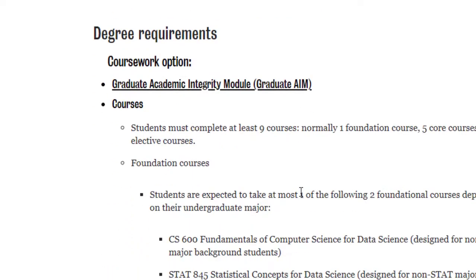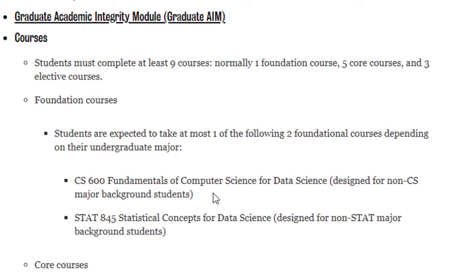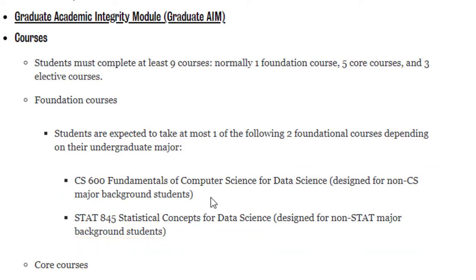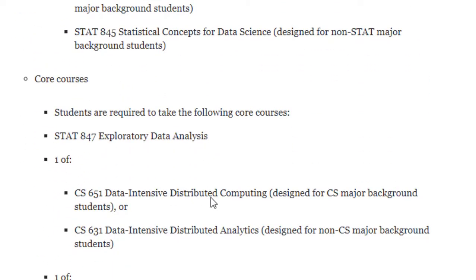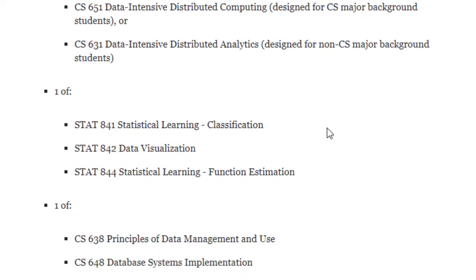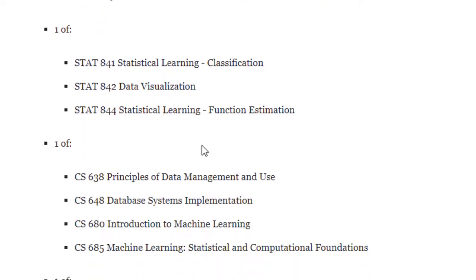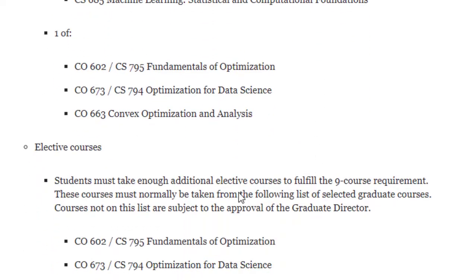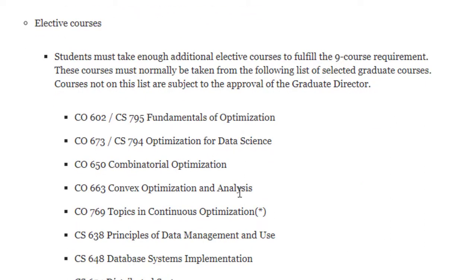If you talk about the course curriculum, there are nine courses you have to complete: one is a foundation course, five are core courses, and three are elective courses. The foundation course covers fundamentals of computer science or data science, depending on your background — for example, if you're from a math background. Among the five core courses, one is Exploratory Data Analysis, one selected from a pair of two options, one from three, one from a bucket of four, and one from three. Finally, you select three electives from a long list.